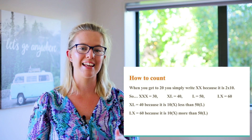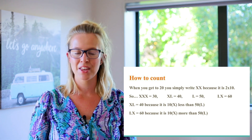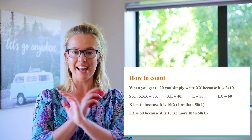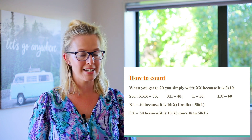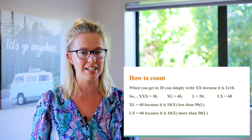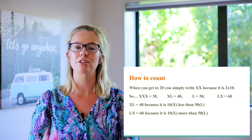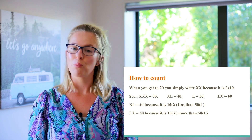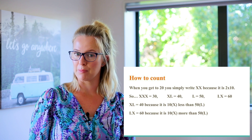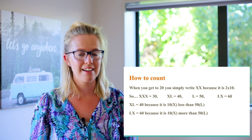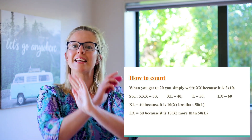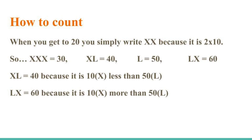Let's look at numbers after twenty. We know that ten is an X, so twenty equals two lots of ten, meaning there are going to be two X's. We can use that for other numbers as well — thirty is three lots of ten, so we have three X's. Forty is a little bit different.